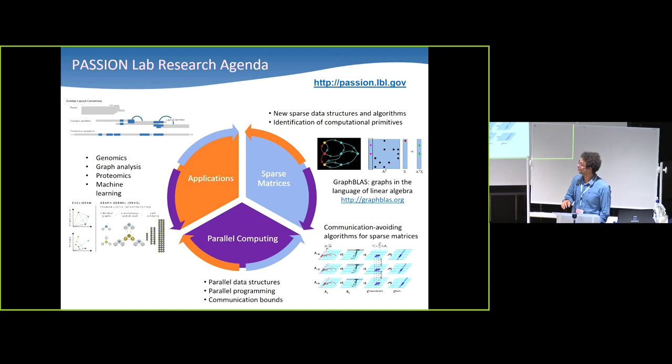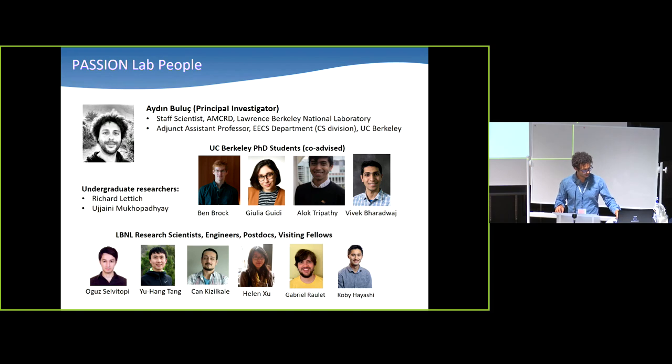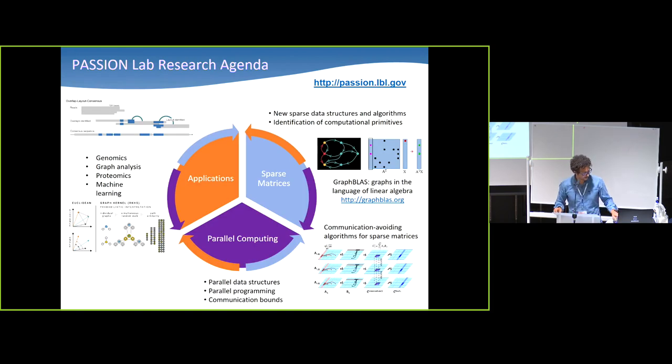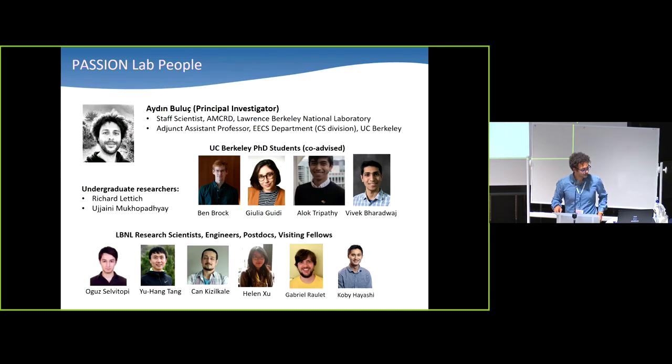We do actually have a supercomputer sitting right under that building that I showed you in the previous slide. Right now ranked number five in the world, I think. But that is such a fast-changing number that I don't keep track of it a lot. You can learn more about that at passion.lbl, that's the name of the group that stands for Parallel Algorithms for Sparse Computations. These are the kind of people. I do have a main appointment at the laboratory and an adjunct faculty appointment at UC Berkeley. So that gives me the opportunity to get postdoctoral fellows at the lab and students at the university.